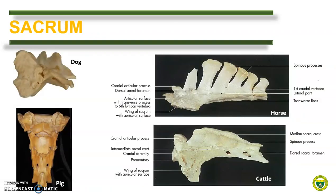The sacral vertebrae are fused forming a single bone called sacrum. Aside from the number of fused sacral vertebrae, we can compare them based on whether the spinous processes are fused or not. Here are the lateral views of the sacrum of dog, horse, and cattle, and a dorsal view of the pig sacrum. In dogs and horse, the spinous processes are not totally fused. This is in contrast with the ruminants like cattle, sheep, and goat, where the spinous processes are fused forming a median sacral crest. In pigs, the spinous processes are replaced by an indistinct crest.